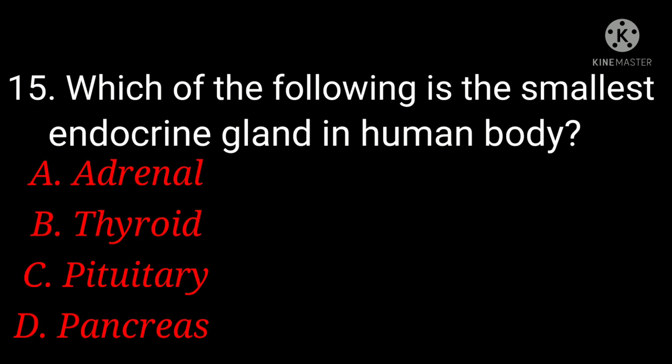Which of the following is the smallest endocrine gland in human body? A. Adrenal, B. thyroid, C. pituitary, D. pancreas. And the answer is option C, pituitary.